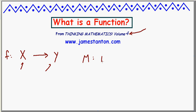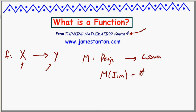For example, my function could be the mothering function. It goes from the set of people to the set of women, and the rule is: assign to each person his or her biological mother. So the mother of Jim — namely me — would be Abby. The one restriction is that each person is assigned one and only one object. Since each person only has one biological mother — they might have many emotional mothers, but one biological mother — this is indeed a function.